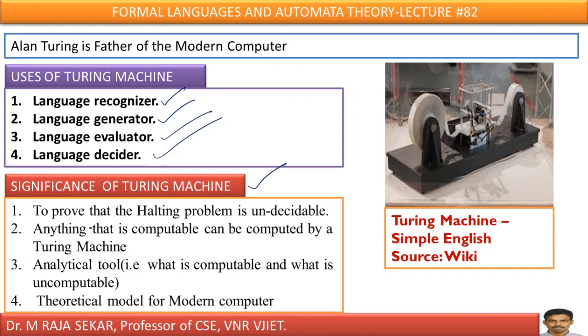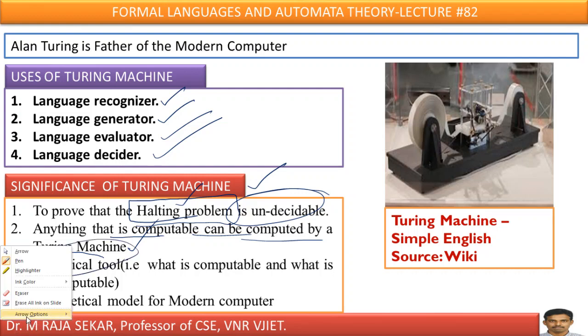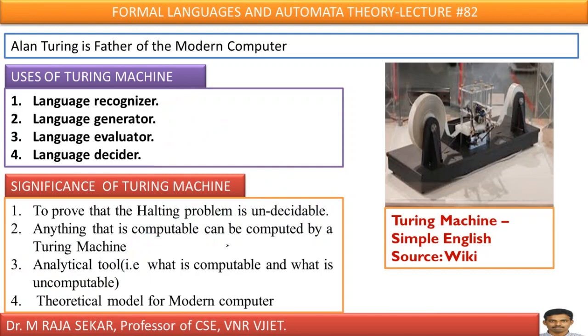Significance of Turing machine: to prove halting problem. Maybe this lecture may not permit me to discuss about what is halting problem, in future I will discuss. To prove halting problem is undecidable, we can make use Turing machine. Anything that is computable can be computed by Turing machine. I can say Turing machine works as analytical tool. What does it mean? Turing machine is useful to decide which one is computable and which one is uncomputable numbers. Computable numbers means, I can say root 3 is a computable number, pi is a computable number, e is a computable number. Again I can say, this lecture may not permit me to discuss about what is computable number, what is uncomputable number, which involves deep mathematics. Let me proceed further.